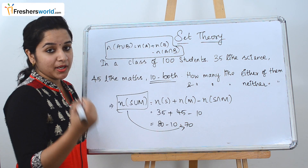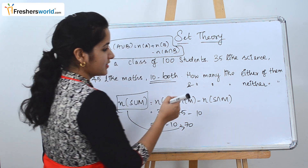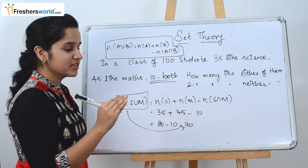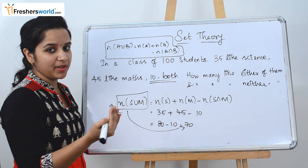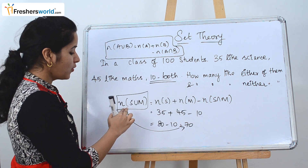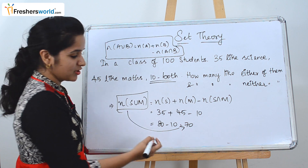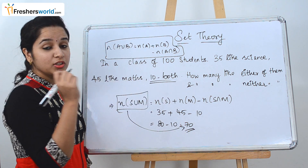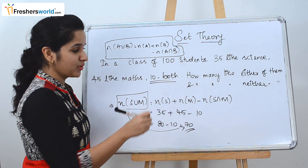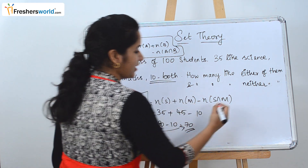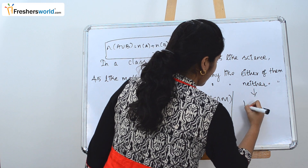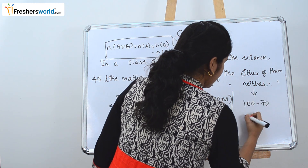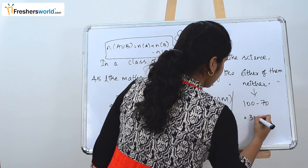The other part of the question asks how many like neither of them — who doesn't like both science and maths. We know either of them is 70 and the total number of students is 100. So neither = 100 − 70 = 30.